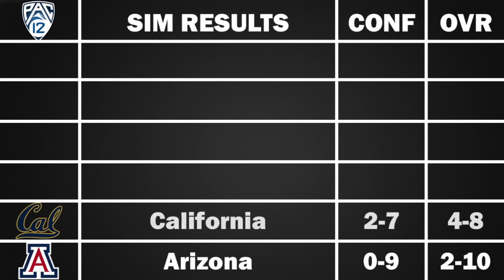Ahead of them, California goes 4-8, 2-7 in conference — another disappointment. Cal beats North Texas, Idaho, Washington, and UCLA, getting a couple of huge road wins. But they lose to Auburn, Arizona State, Oregon State, Utah, USC, Oregon, Washington State, and Stanford. A bad season for Cal.